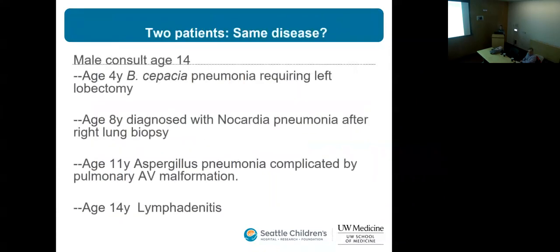Here's the first case — I'll give you two different cases and ask if they're the same disease. First: a male I saw at age 14. At age 4, diagnosed with B. cepacia pneumonia and underwent left lobectomy. At age 8, nocardia pneumonia with right lung biopsy. At age 11, aspergillus pneumonia complicated by pulmonary AVM. By age 14, persistent lymphadenitis. What do you think? CGD — very good. Now I'll show you a different case.